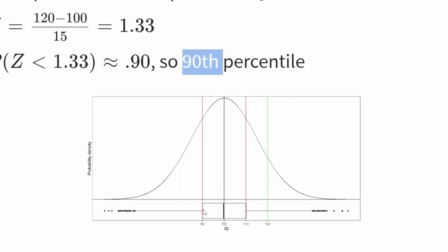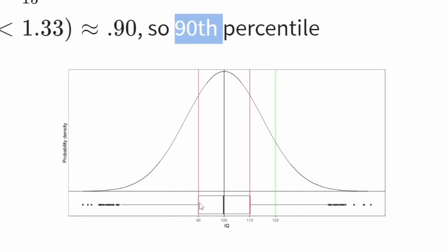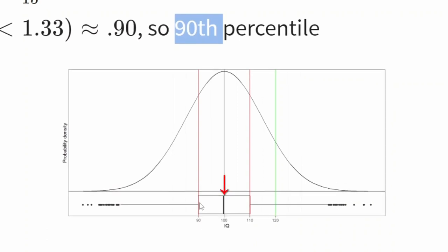At the bottom of the slide is a box plot. A box plot indicates the median by the dark black line. It also indicates the 25th and 75th percentiles — the first and third quartiles — as the edges of the box. The whiskers extend to 1.5 times the interquartile range, which is the distance between the first and third quartile. Any score beyond that is considered an outlier and is plotted separately as dots. Box plots are very often used to summarize the distribution of scores.